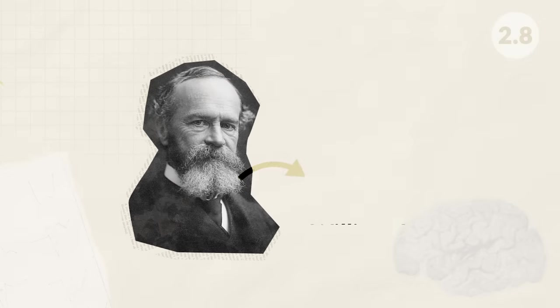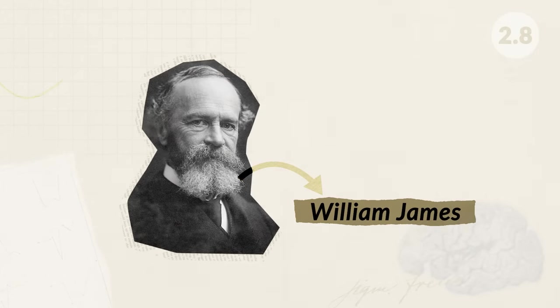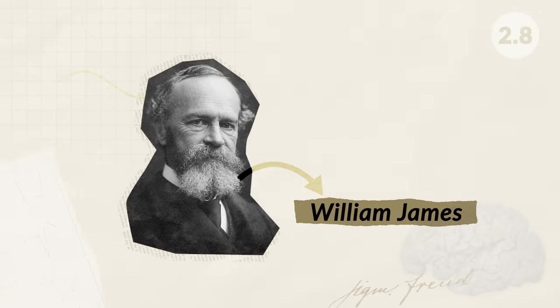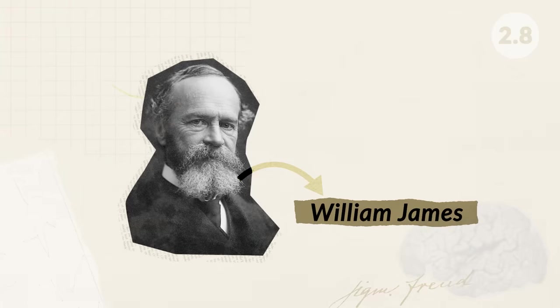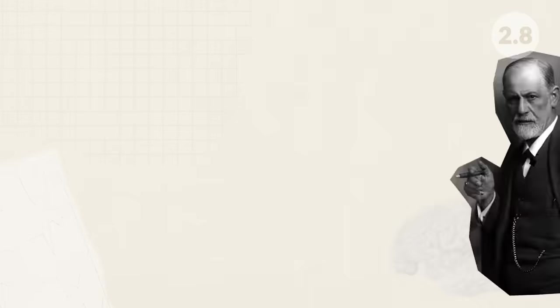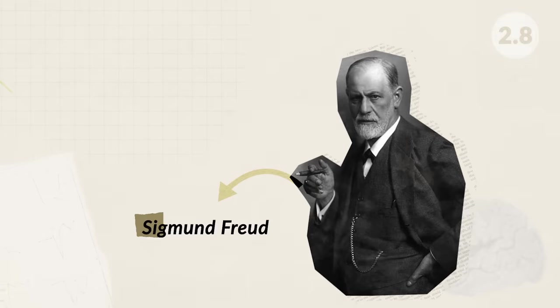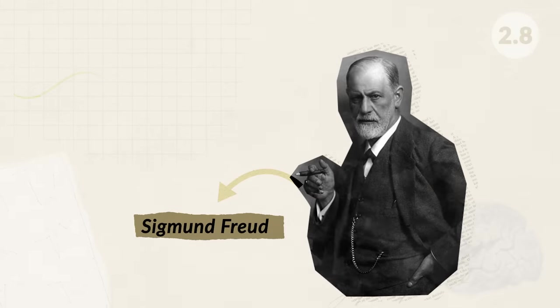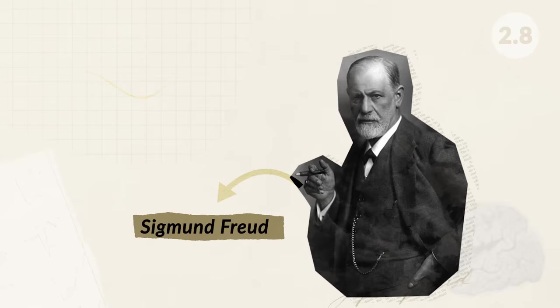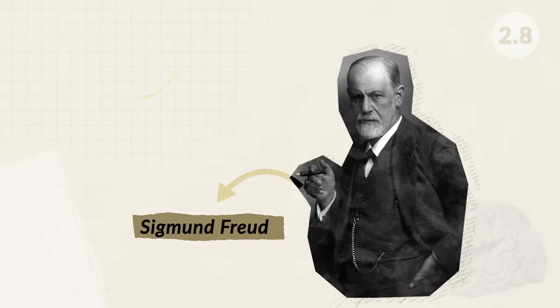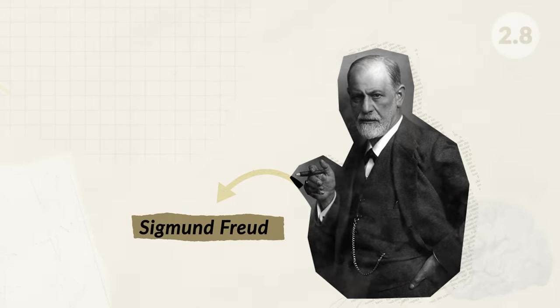Speaking of the brain, we also have to talk about an individual's consciousness — when an individual is awake and aware of their own external stimuli or mental activity. Individuals such as William James believed that our consciousness was a stream: all interconnected, and you couldn't just break it into different parts. While other individuals such as Freud believed that our consciousness was made up of our conscious mind, our subconscious mind, and also the unconscious mind — with the unconscious mind influencing the conscious mind.